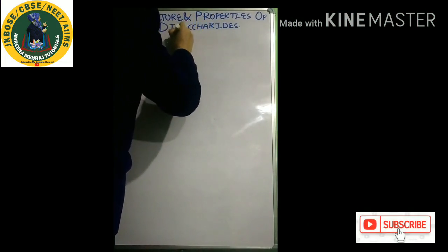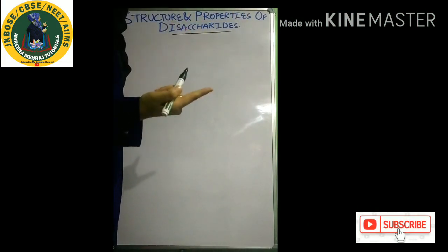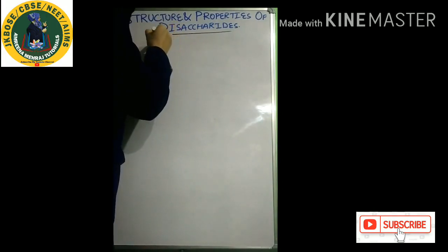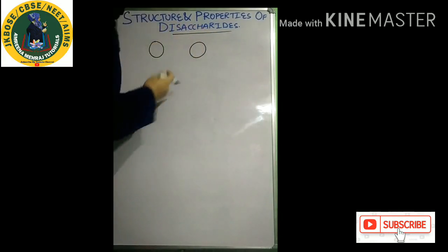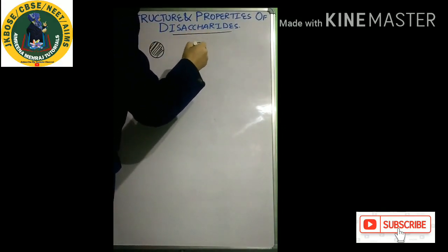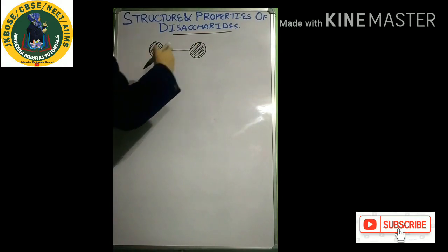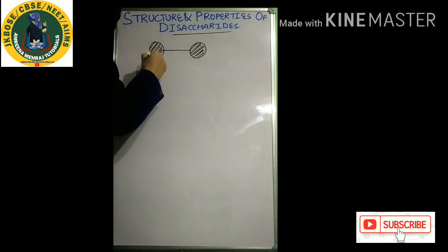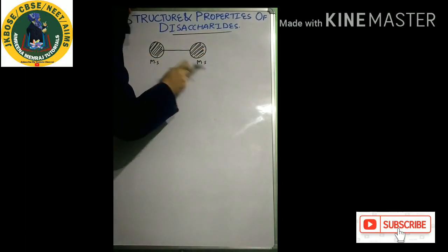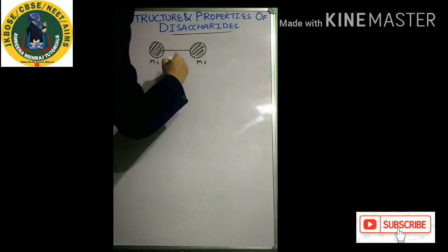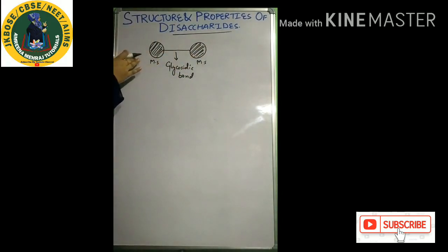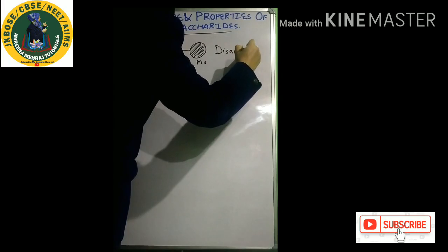What are disaccharides? Disaccharides are any two monosaccharides joined together with the help of a glycosidic bond. So I'll take any two sugars or monosaccharides — these circles represent monosaccharides. These monosaccharides are joined together with the help of a glycosidic bond. So I have two sugars joined together with the help of a glycosidic bond, and this substance becomes a disaccharide.